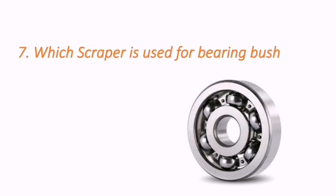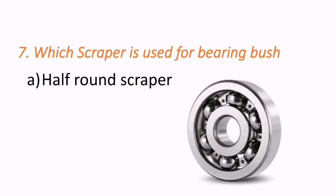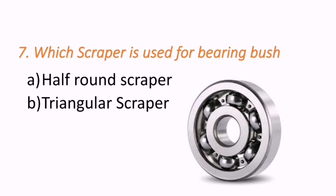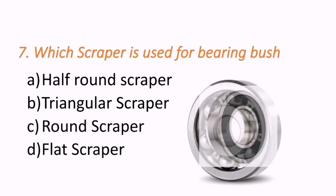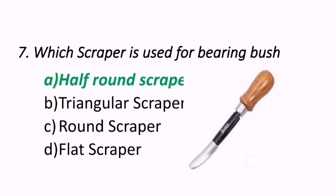Seventh question: which scraper is used for a bearing bush? Options are half round scraper, triangular scraper, round scraper, or flat scraper. The correct answer is half round scraper, as seen in the figure — the half round scraper is used for bearing bush.